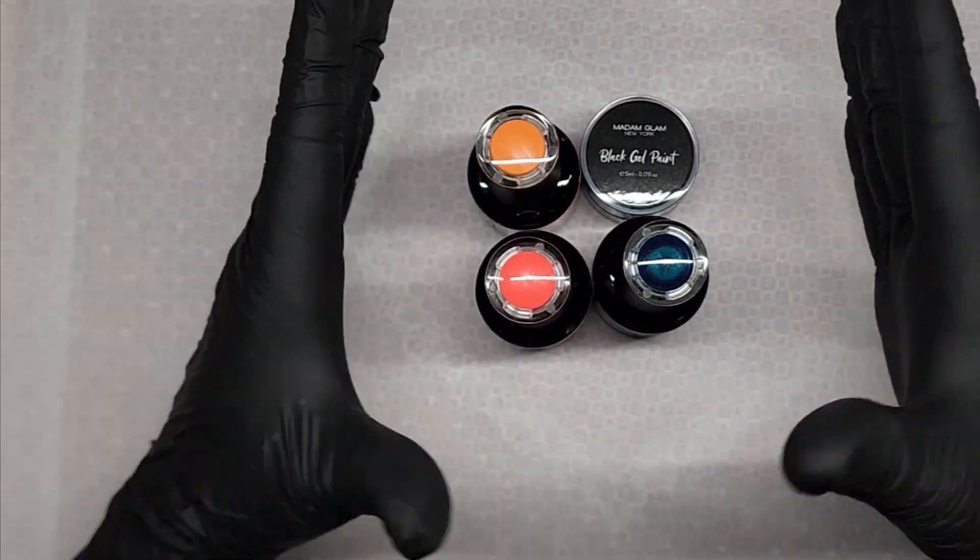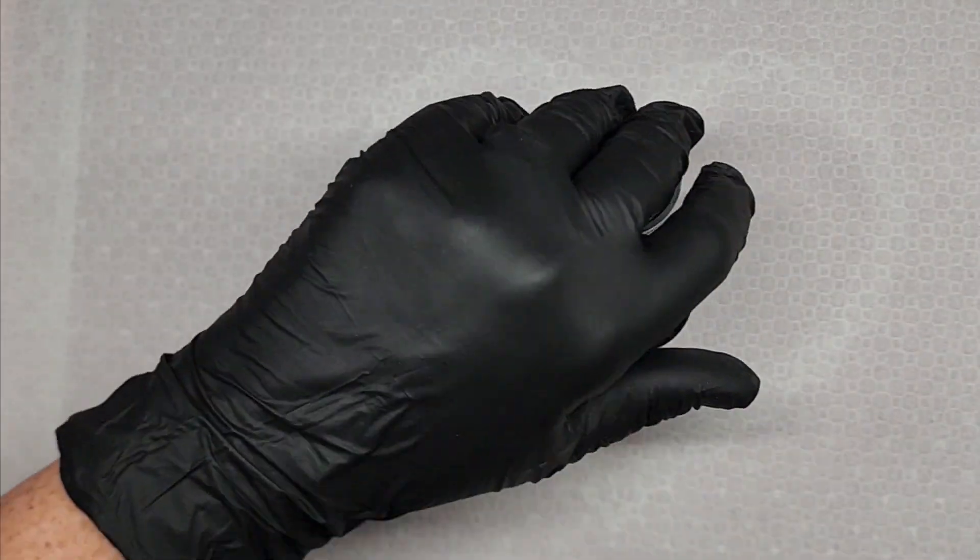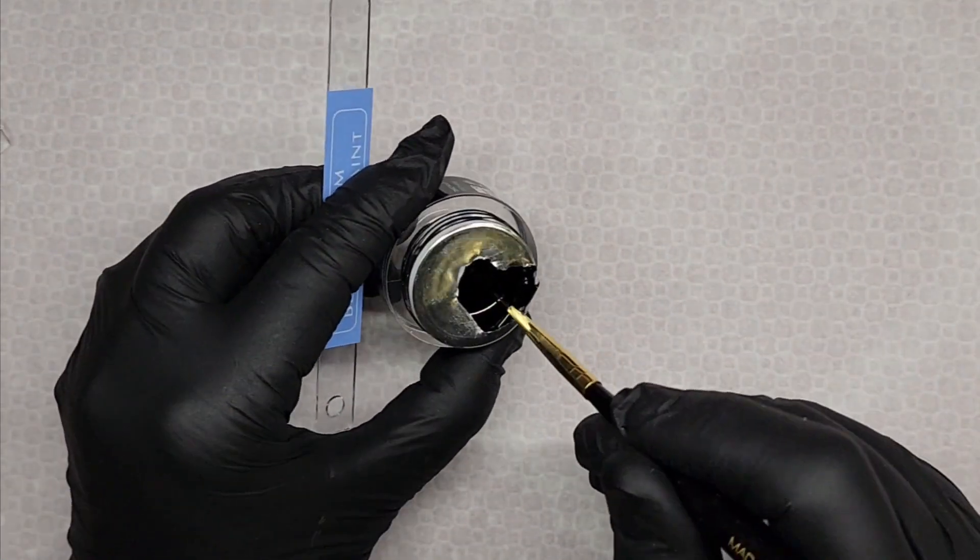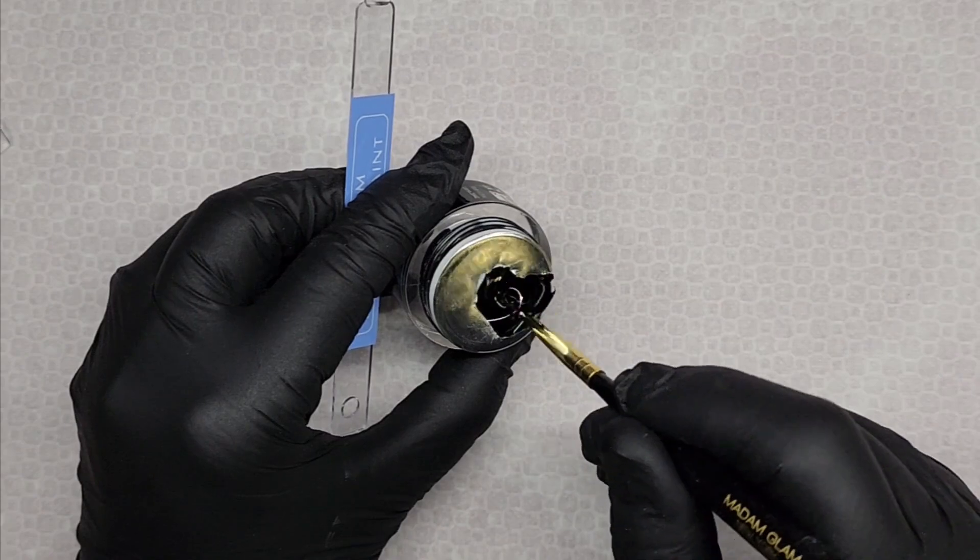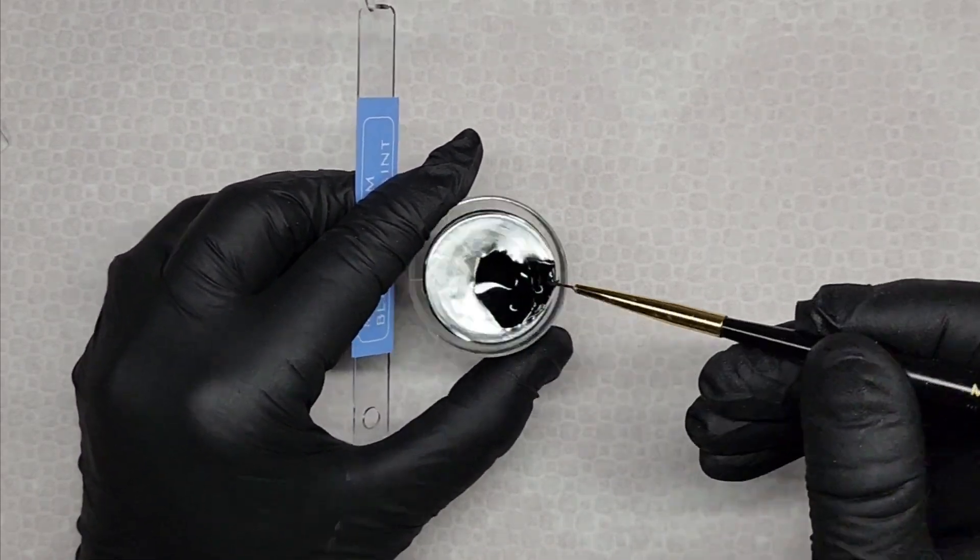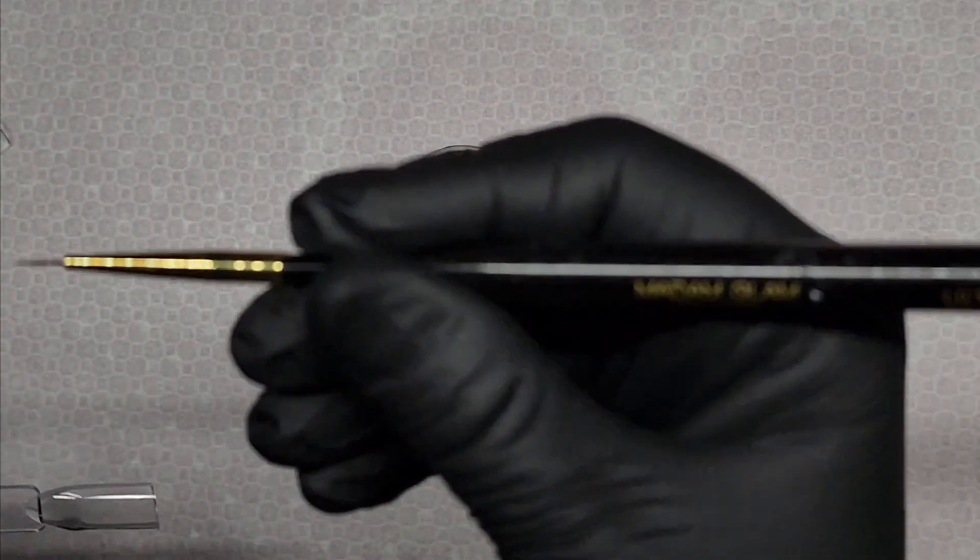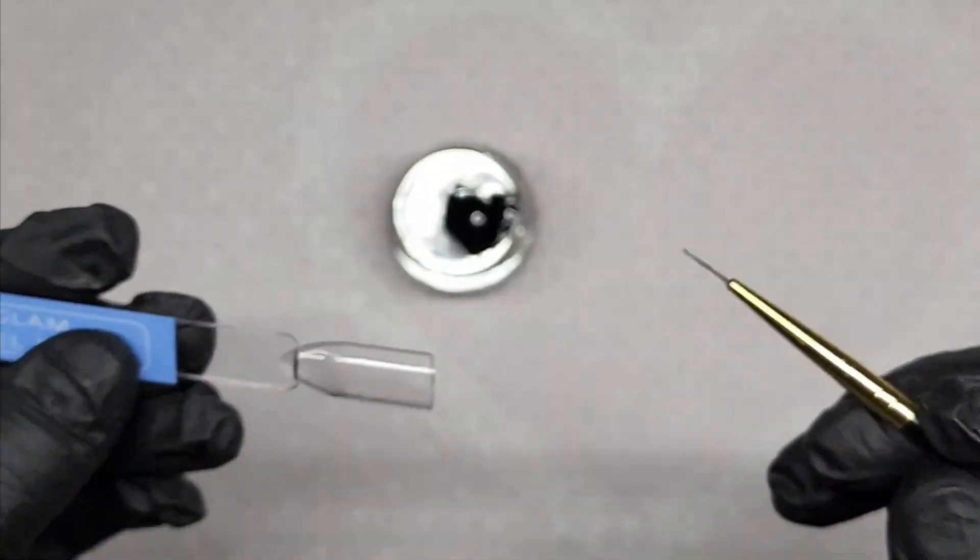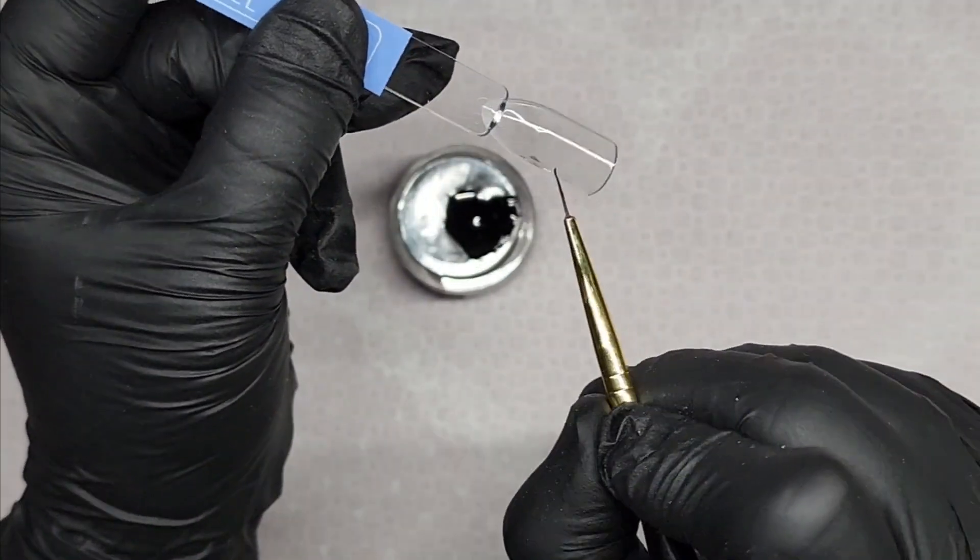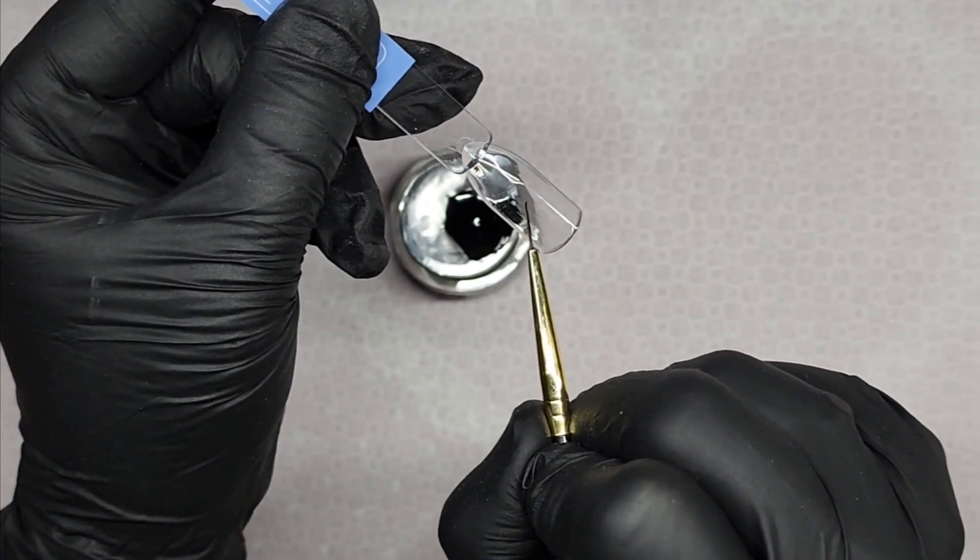I'm gonna go ahead and get everything ready and we're gonna swatch these. I'm just gonna do the black gel paint. I already went ahead and opened it a little bit here, and I have the Madam Glam liner. I didn't put any base coat or anything.